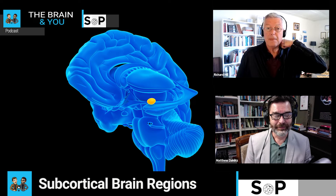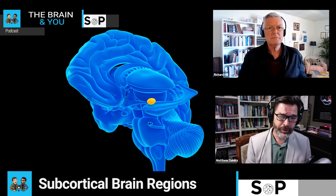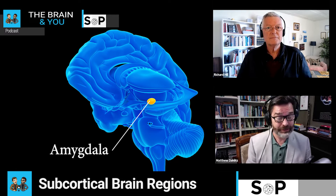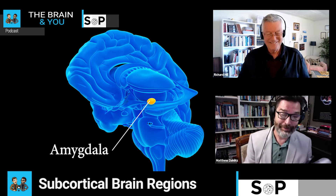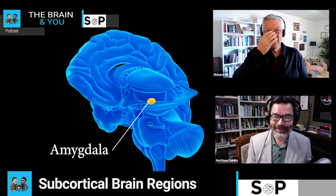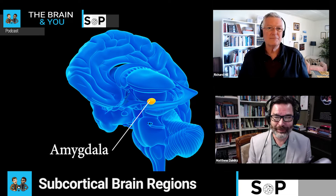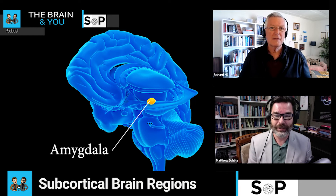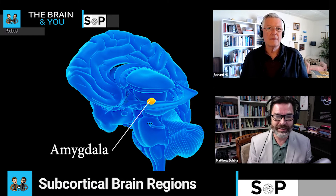That memory is obviously then consolidated in the cortex. Now, another area we're not really going to focus on that much today is the amygdala — it's had a lot of airplay. We can point you to other things where we've talked about the amygdala, but maybe we can just tease out one or two points about it.